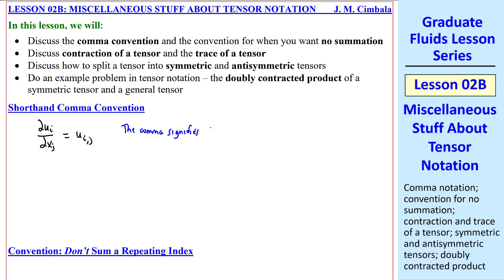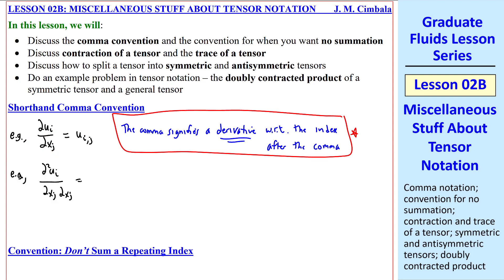The comma signifies a derivative with respect to the index after the comma. Here, for example, ui,j implies del ui del xj. Another example, del squared ui del xj del xj, can be written as ui,jj.